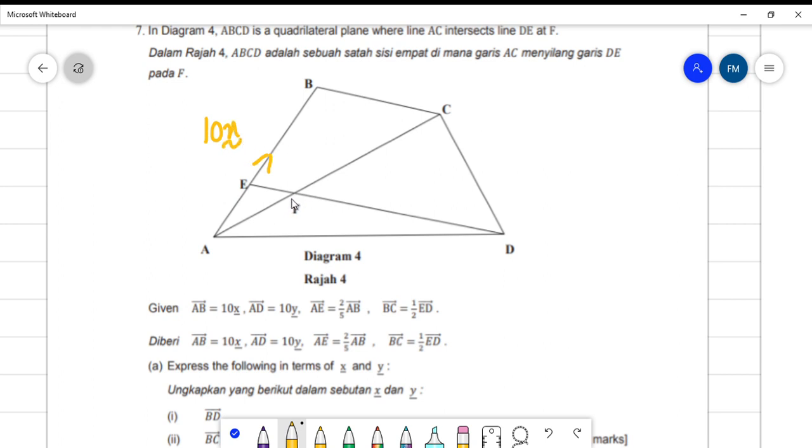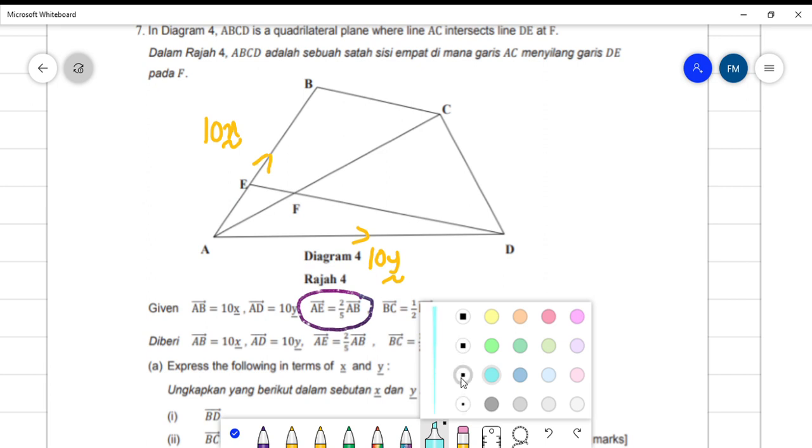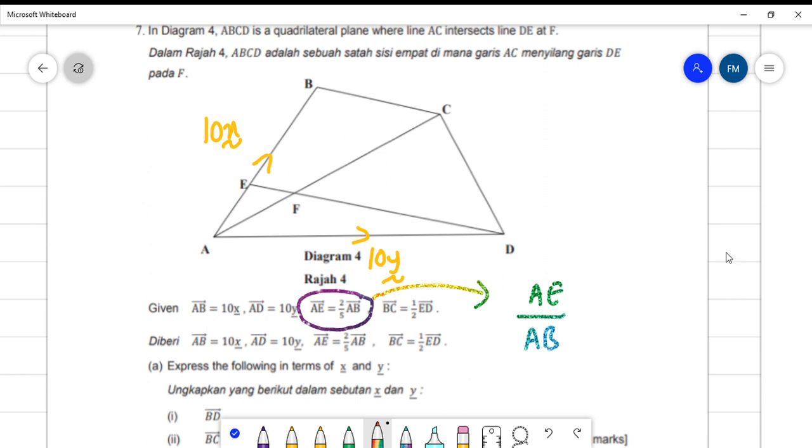For this part, you transfer it, you change it into ratio, in terms of ratio. So AE over AB will become AE over AB, 2 over 5. So AE is 2 parts, AB is 5 parts, so the other is 3 parts.